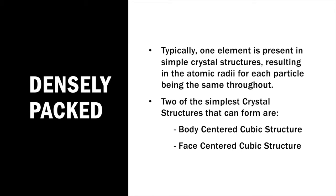The two simplest types of structures that can form are the body-centered cubic structure and the face-centered cubic structure, and they differ in the amount of atoms that can fit per unit cell, which we'll show later.